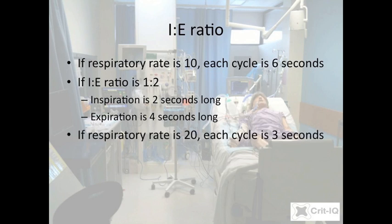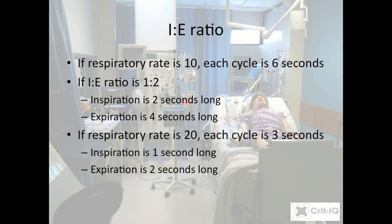If the respiratory rate is increased and the IE ratio remains the same, both the inspiratory time and the expiratory time will be reduced. For example, if the respiratory rate changes to 20, each cycle must now occur in 3 seconds. If the IE ratio remains at 1 to 2, then the inspiratory time will be 1 second and the expiratory time will be 2 seconds. The inspiratory flow will have to double.